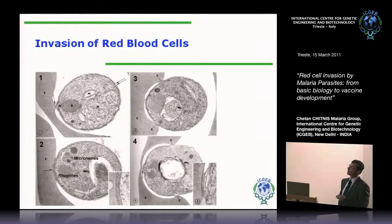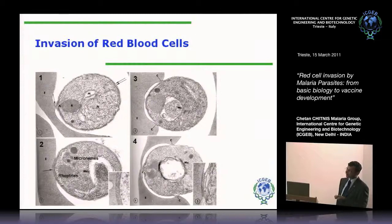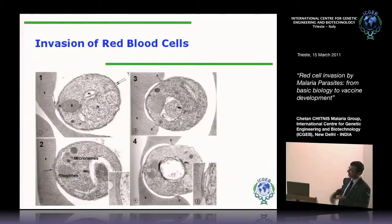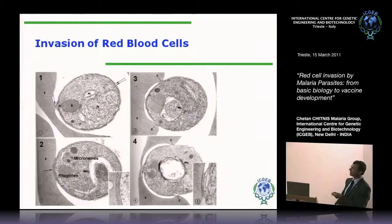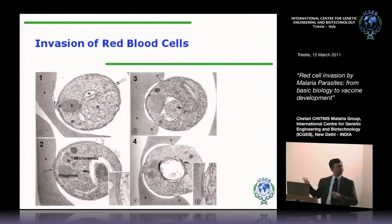In the first step, the parasite attaches and then reorients with the apical end facing the red cell membrane. Then you can see a junction develop — this thickening of the red cell membrane at the point of contact. And then as the parasite moves in, this junction moves around the parasite. If you think in three dimensions, the junction will be all around this merozoite and will move around the merozoite so that it's finally in a vacuole surrounded by a vacuolar membrane. So it's a complex process, possibly involving multiple receptor-ligand interactions.